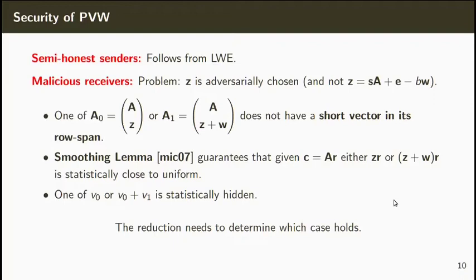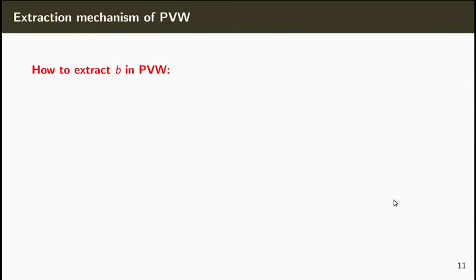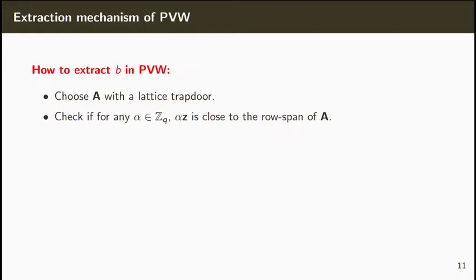So the problem now is how the reduction knows which case holds. Let's see how the extraction works in PVW. The trick here is that the reduction will choose the matrix A together with the lattice structure. Now, given Z, the reduction can check if there's an alpha in ZQ such that alpha times Z is close to the row span of A.